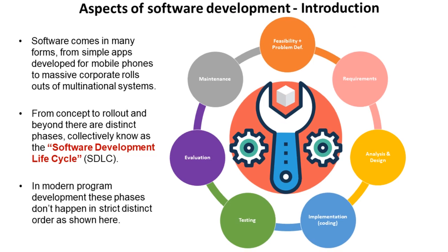Now, in modern programming, these development phases don't happen in distinct order as shown here. This is a very out of date model. In the next series of videos, we are going to go through each of these sections and highlight the areas relevant to your spec, and talk quite a lot about the agile and iterative method of modern program design and development.